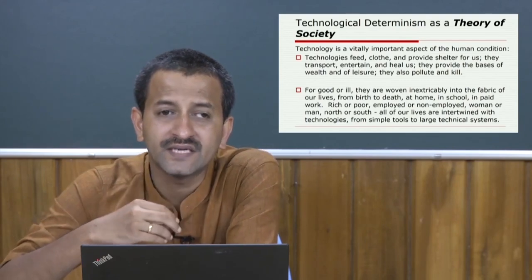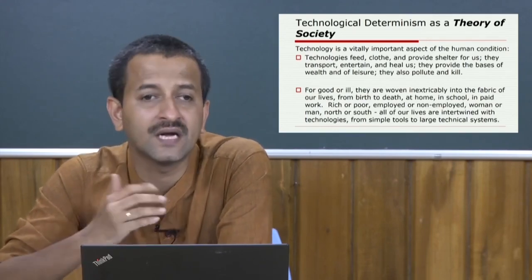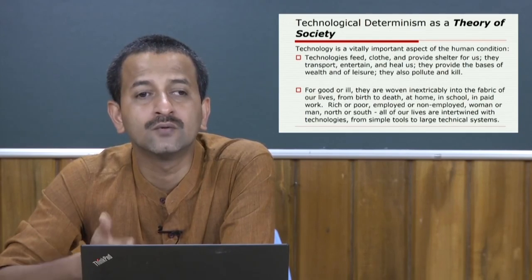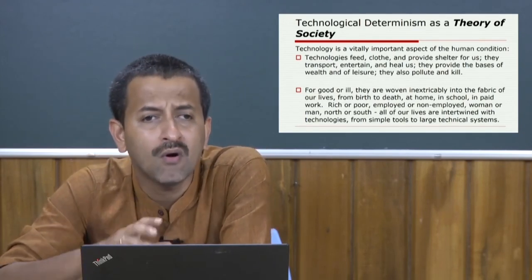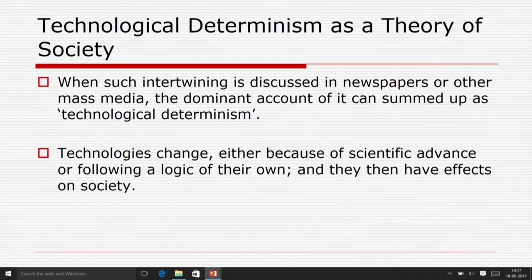For good or ill, technologies are often woven inextricably into the fabric of our lives from birth to death — at home, in school, in paid work and so on. Rich or poor, employed or non-employed, woman or man, north or south — all of our lives are intertwined with technologies from simple tools to large technical systems. When such intertwining is discussed in mass media, the dominant account can be summed up as technological determinism: social, political, and economic changes are attributed to changes in technologies.